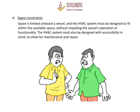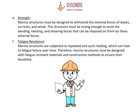D. Space Constraints: Space is limited on board a vessel, and the HVAC system must be designed to fit within the available space without impeding the vessel's operation or functionality. The HVAC system must also be designed with accessibility in mind to allow for maintenance and repair. E. Strength: Marine structures must be designed to withstand the extreme forces of waves, currents, and winds, resisting bending, twisting, and shearing forces. F. Fatigue Resistance: Marine structures are subjected to repeated and cyclic loading, which can lead to fatigue failure over time, so they must be designed with fatigue-resistant materials and construction methods.